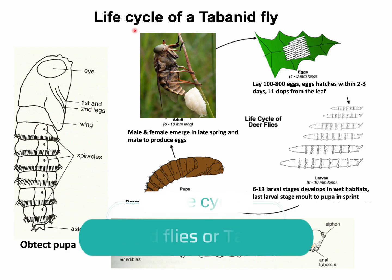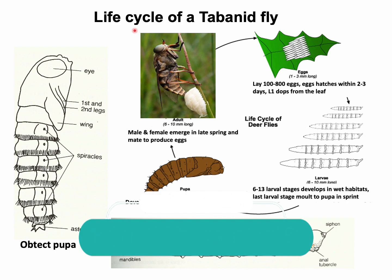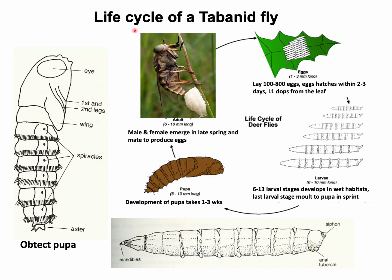Regarding the life cycle of Tabanid flies: both male and female flies feed on nectars, and after mating, female flies need a blood meal to produce eggs. A Tabanid fly lays around 100 to 800 eggs; many species lay eggs on the underside of leaves of trees. Each egg hatches within two to three days, and the first larval stage drops from the leaf. There are around six to thirteen larval instars in the life cycle. The pupa develops within one to three weeks and is of the obtect type — appendages such as wings and legs are bound to the body by molting fluid and can be seen externally.